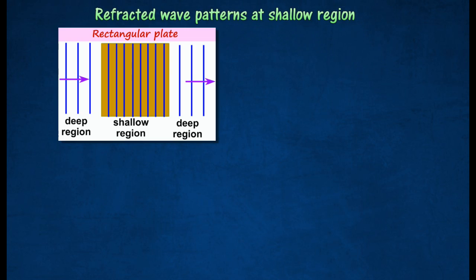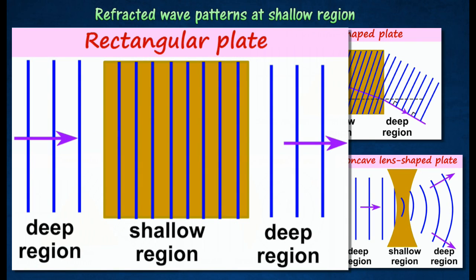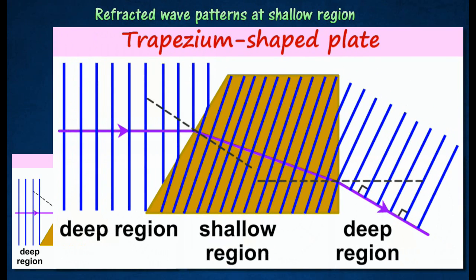Here are a few refracted wave patterns at shallow region for different types of plate shapes. Refracted wave on rectangular plate. Trapezium-shaped plate with slant side facing the incident wave.